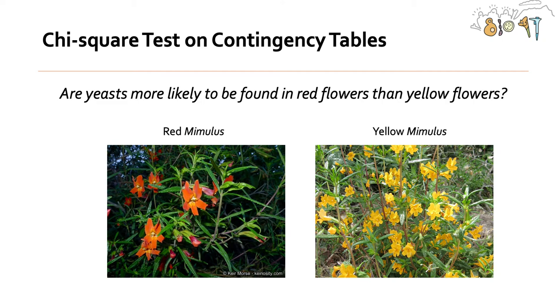All right, let's move on to the real information at hand: chi-square test on contingency tables. A question you might be wondering, and I know you're staying up late at night wondering this: Are yeasts more likely to be found in red or yellow Mimulus flowers? I know I stay up late at night thinking about this question.